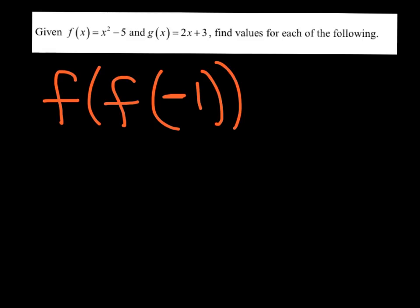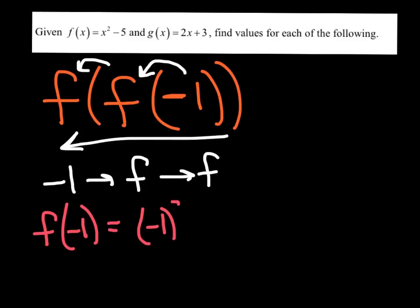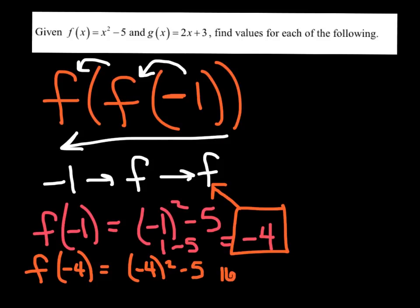There's no rule that says you have to use f and g every time. This one says f of f of negative 1. Working backwards: I'm taking negative 1, substituting that into f, then taking that output and substituting it into f again. Finding f of negative 1: (−1)² − 5 = 1 − 5 = −4. Now taking that output and substituting back into f: f of negative 4 = (−4)² − 5 = 16 − 5 = 11. And there you have it — simple function composition.